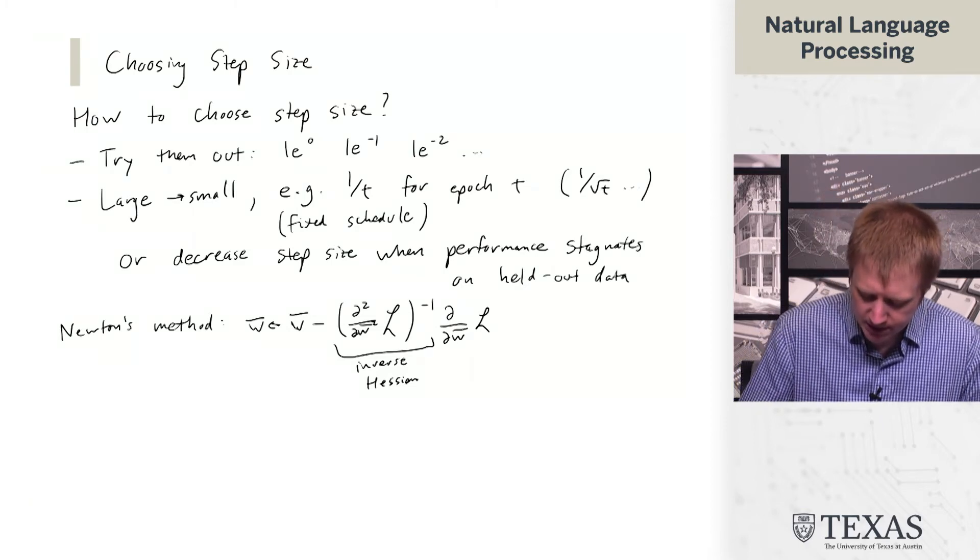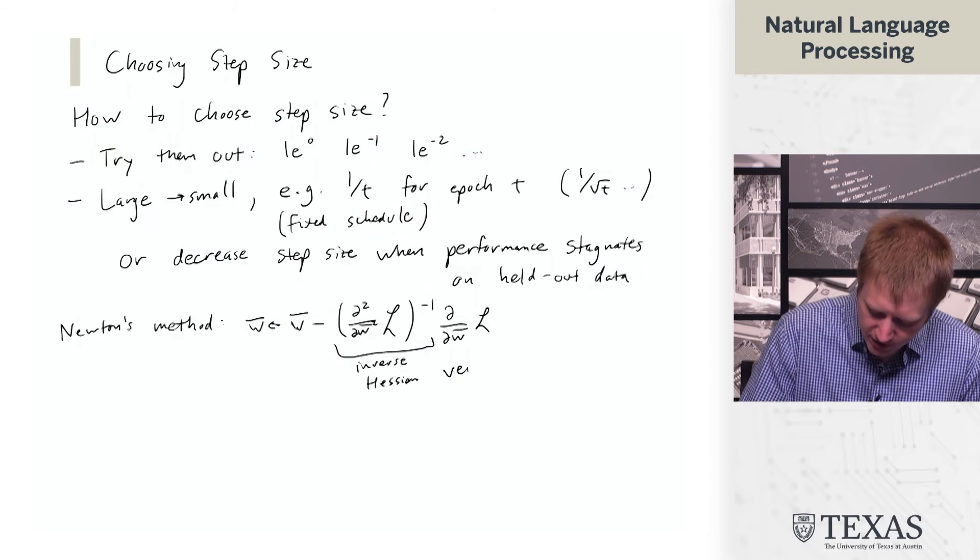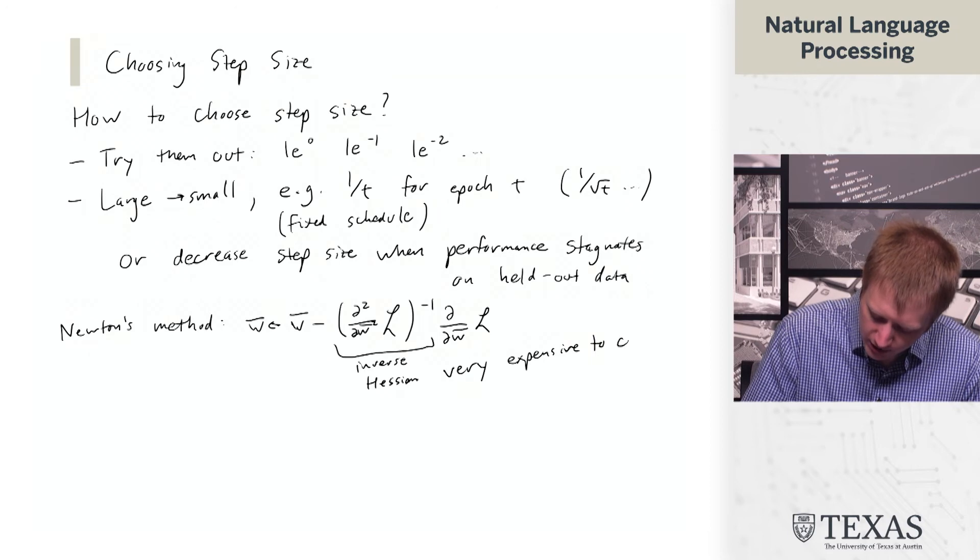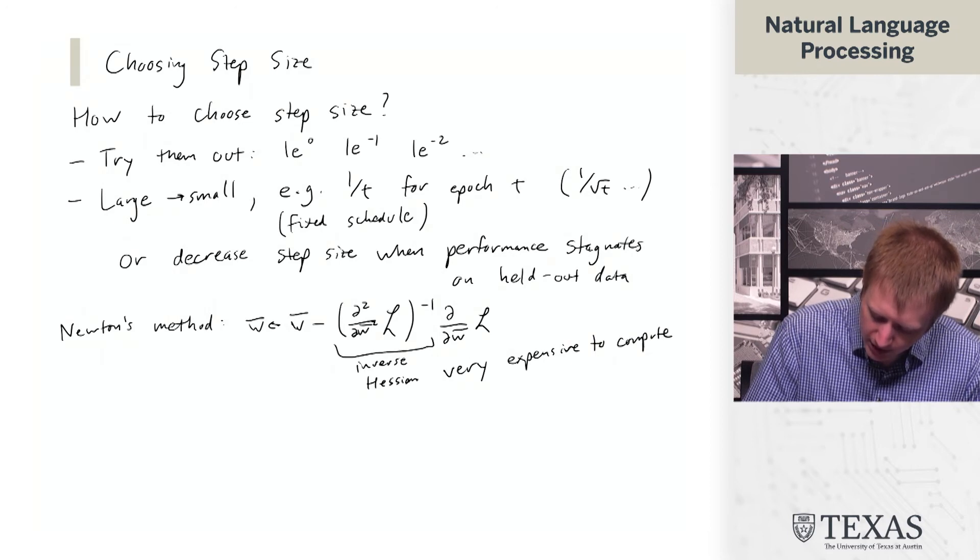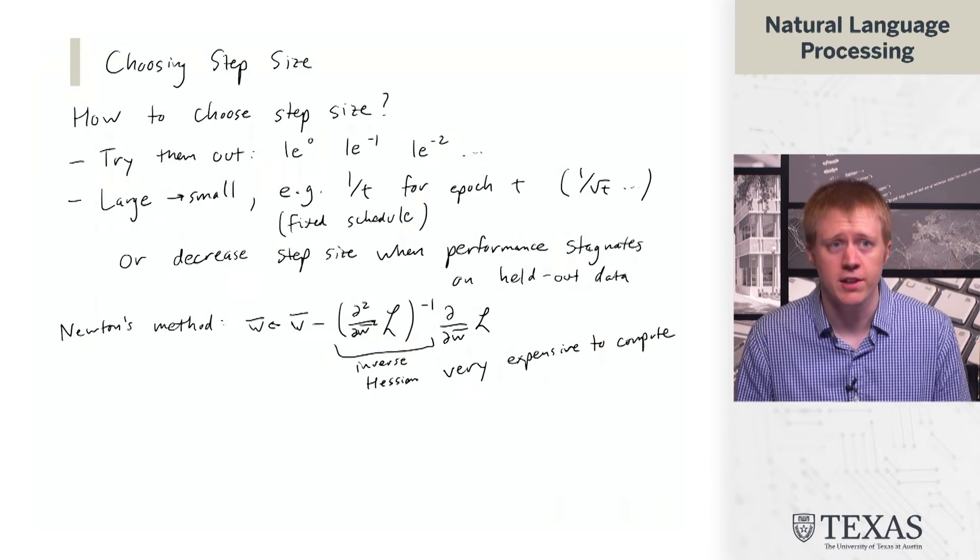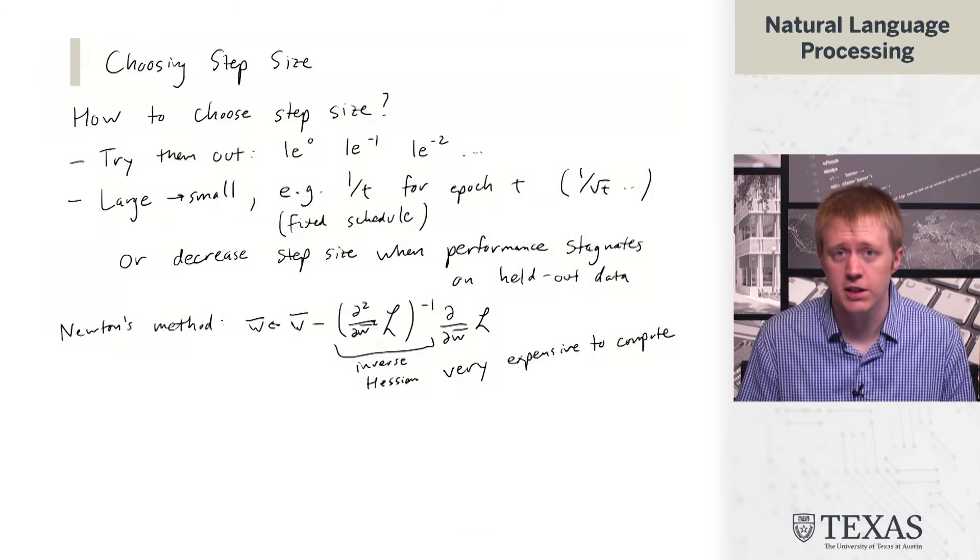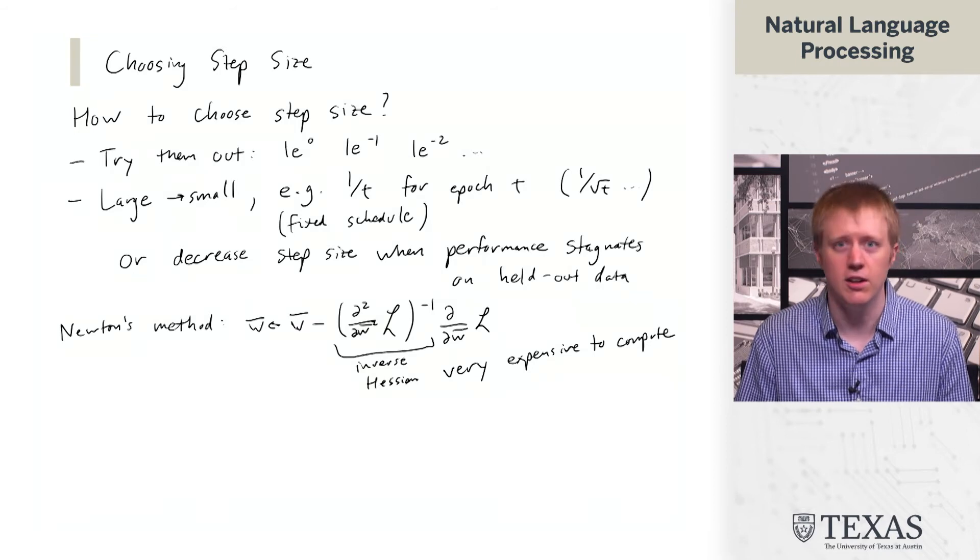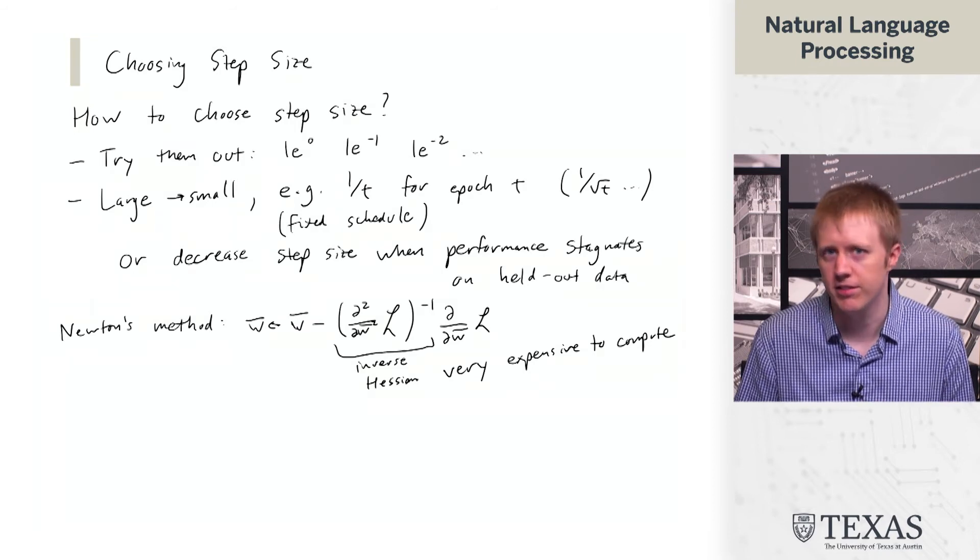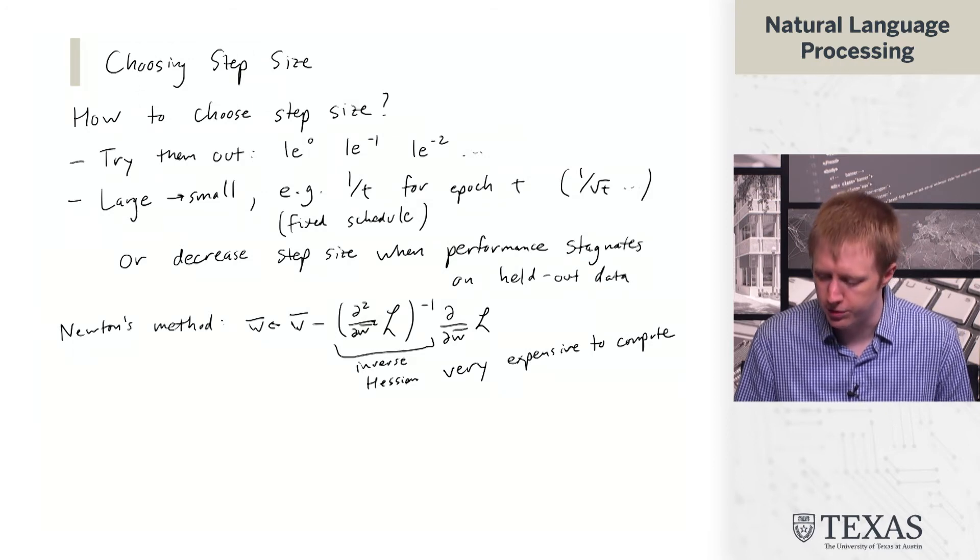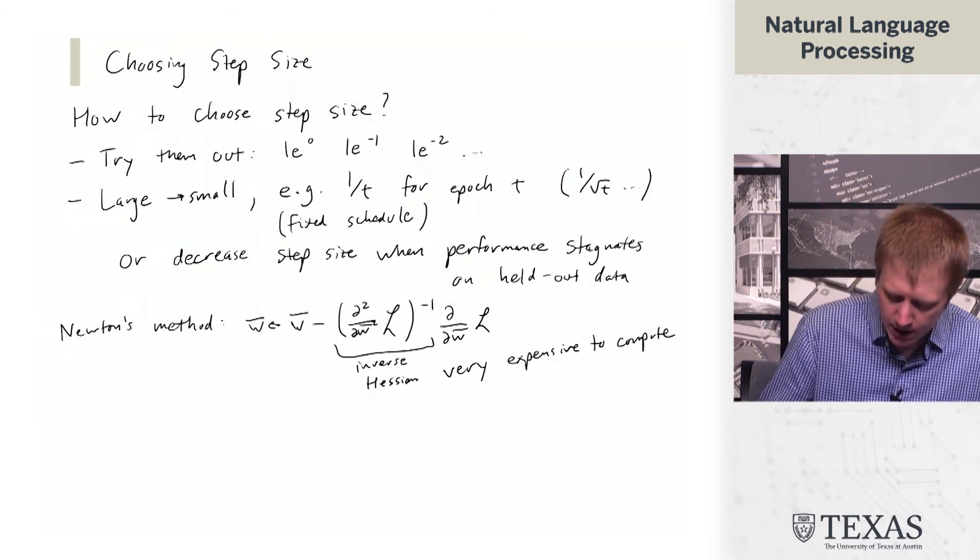The problem is that this is very expensive to compute. It's quadratic in the number of features, so in big neural models, or even in linear models with hundreds of thousands of features, it starts to become totally infeasible to do this.